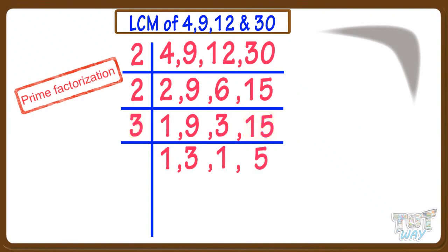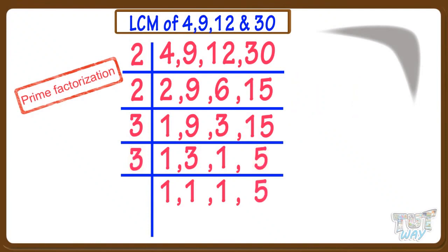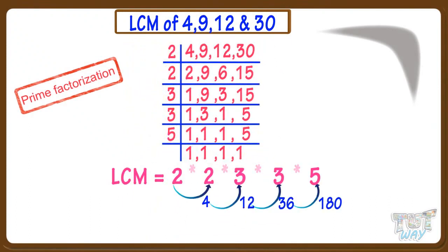Now again take 3, as one number can still be divided by 3. Now we can't take 3, as no number can be divided by 3. The next prime number is 5 — yes, 5 will divide the number left. All numbers are now reduced to 1. The next step is to take all these numbers and multiply them. 180 is the least common multiple.